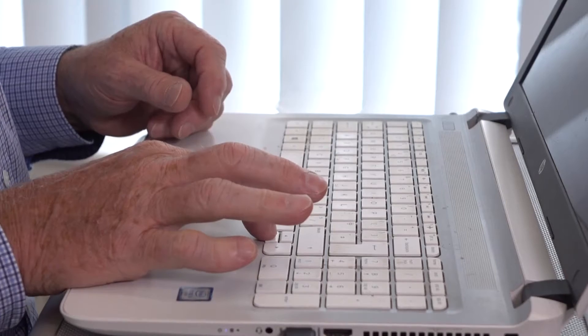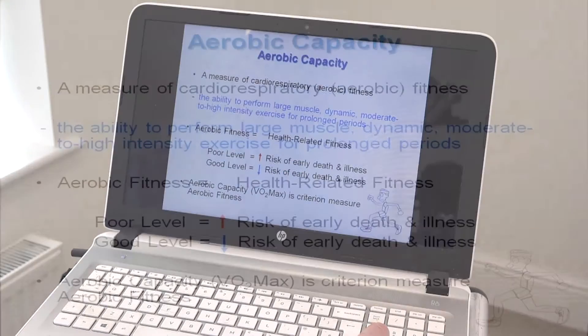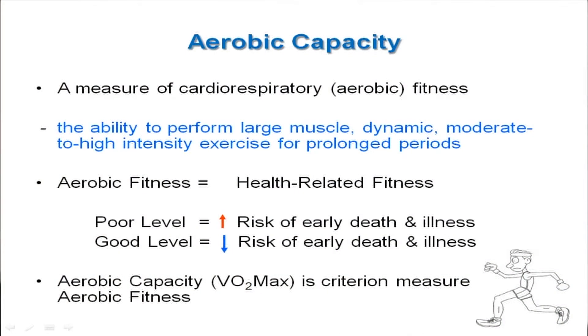This is session two of the Chester Step Test, and what we're going to deal with in this session is aerobic capacity or VO2 max. Aerobic capacity is really a measure of cardio-respiratory or aerobic fitness, and it's the ability to perform large muscle, dynamic, moderate to high intensity exercise for prolonged periods.